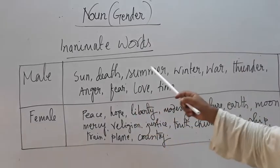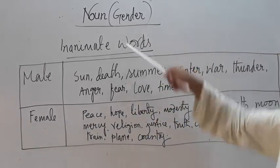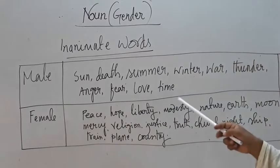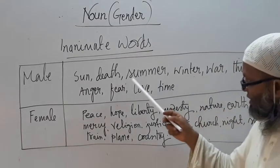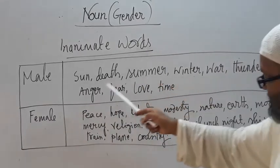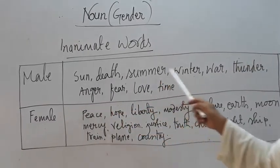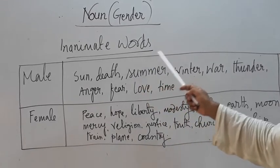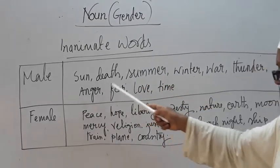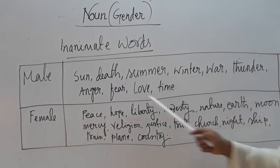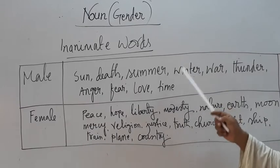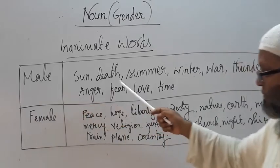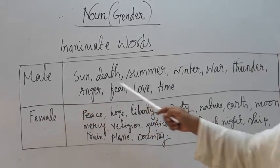Now see that there are some other inanimate words which are included in gender — that means noun. These inanimate words are lifeless; they have no life, that's why they are called inanimate words. And the masculine words among them are: summer, winter, war, thunder, anger, fear, love, time. Those words are used as masculine because of their manly characteristics.